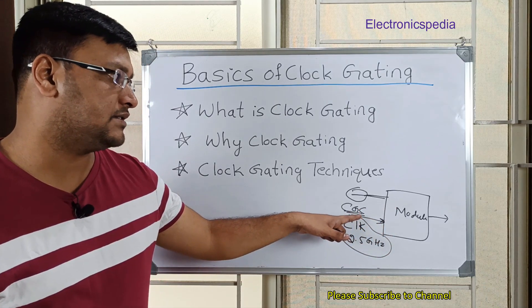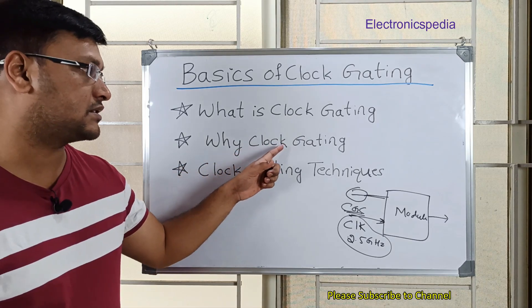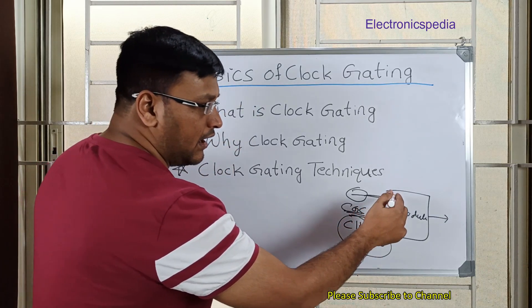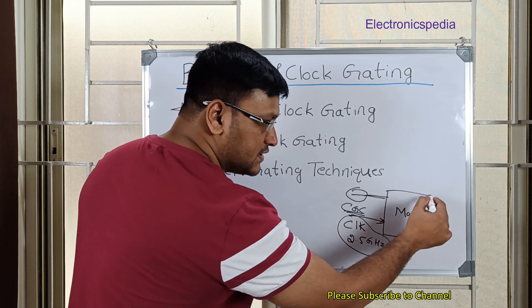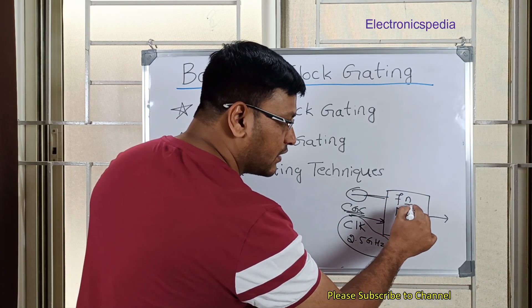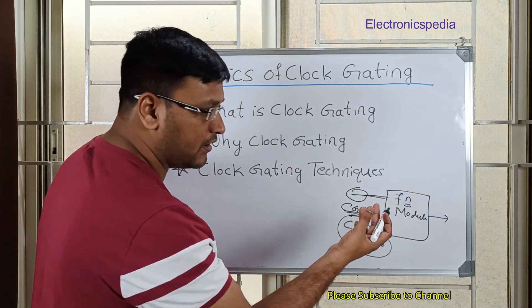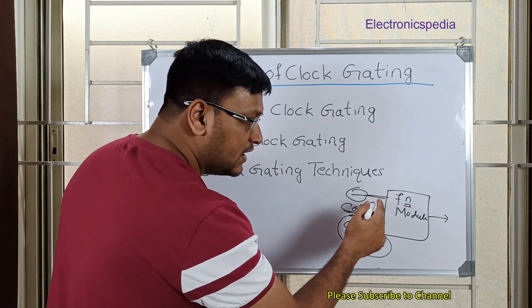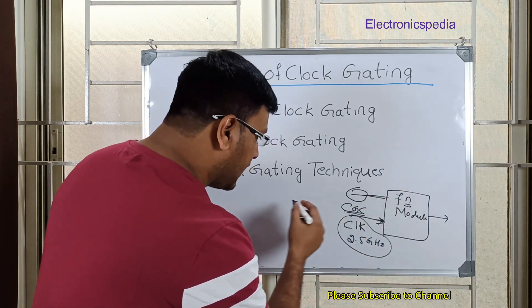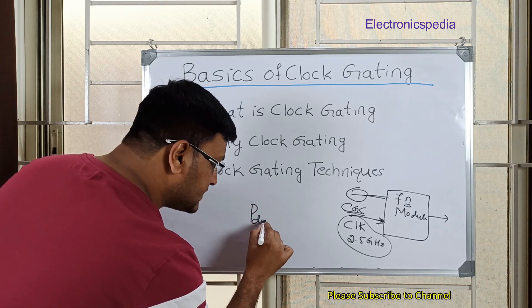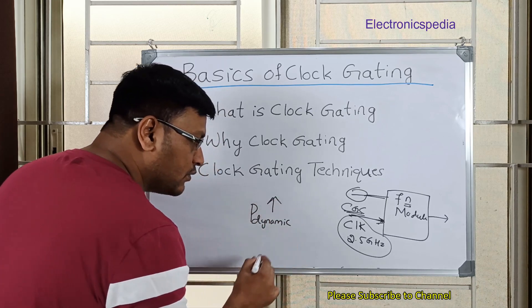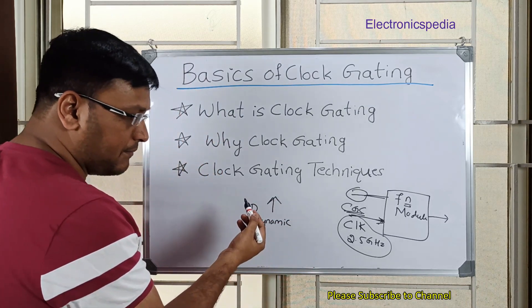So now why do we do this clock gating? As I explained, if you consider this same design, if the module is not being used - meaning if some function of your entire chip is not being used in some case - then what happens is if you are continuously providing this clock, this module is always running and then your dynamic power dissipation increases.